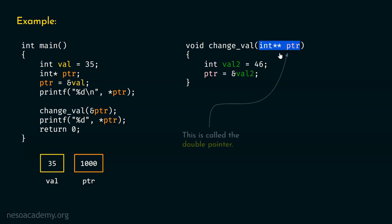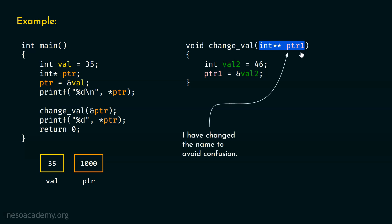What does it mean? This is called a double pointer. This pointer is a double pointer, which means it is actually a pointer to a pointer. And that pointer is nothing but a pointer to an integer. This is how you read it: ptr is a pointer to a pointer, and that pointer is a pointer to an integer. In order to avoid confusion, I am going to change this to ptr1. Double pointer is nothing but a pointer to a pointer — you must always remember that.